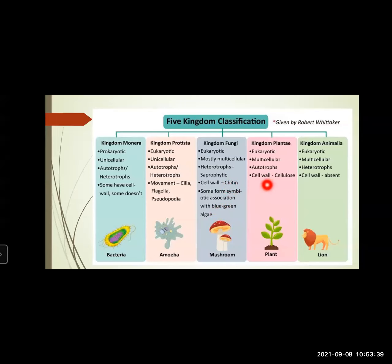Next kingdom was Plantae. Plants are eukaryotic, they are multicellular. They are autotrophs — they can prepare their own food with the help of the process called photosynthesis. The cell wall of plants is made up of cellulose. The last kingdom was Animalia. The organisms are eukaryotic, multicellular, heterotrophs — they cannot prepare their own food; they depend upon others, either plants or animals. Cell wall is absent. These were the five kingdom classification and their characteristics as given by Robert Whittaker.